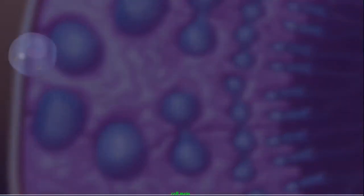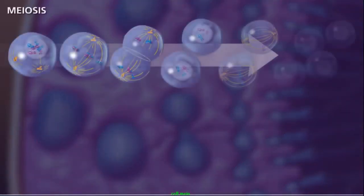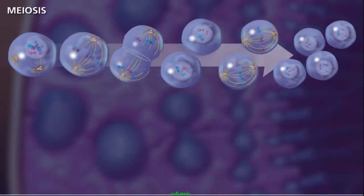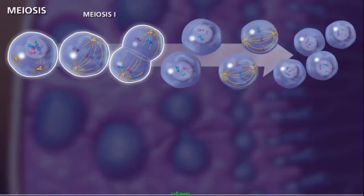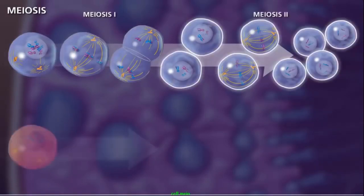For the successful reduction in the number of chromosomes to occur in the new haploid daughter cells, two rounds of divisions are necessary. These divisions are termed meiosis I and meiosis II.